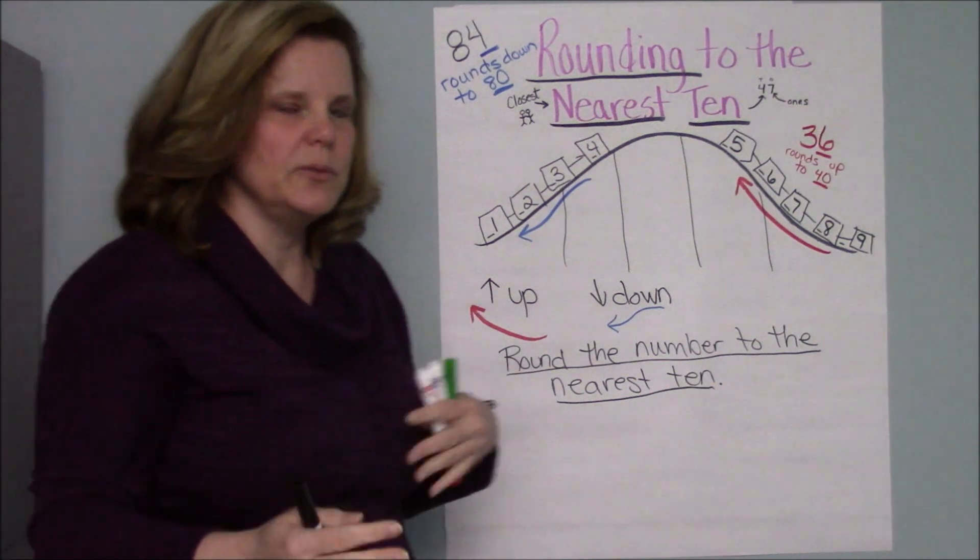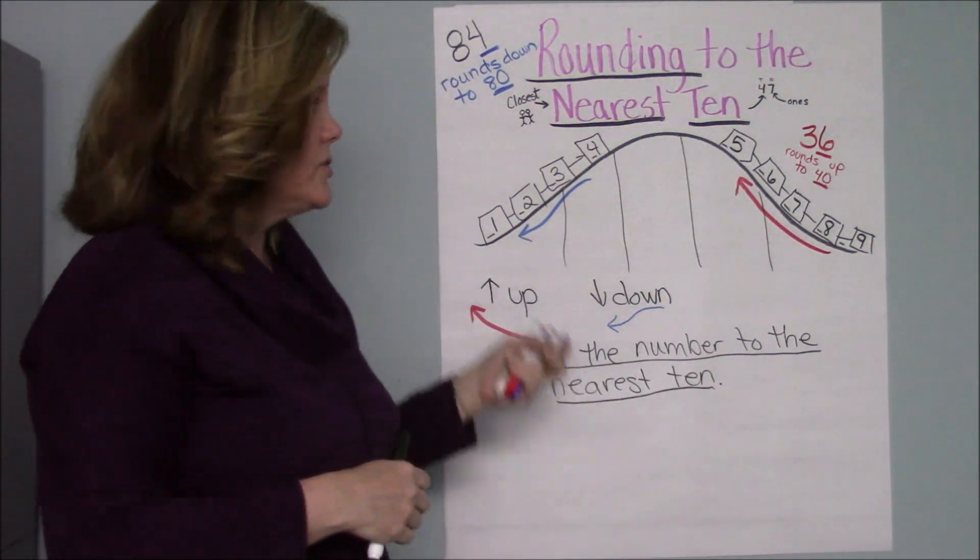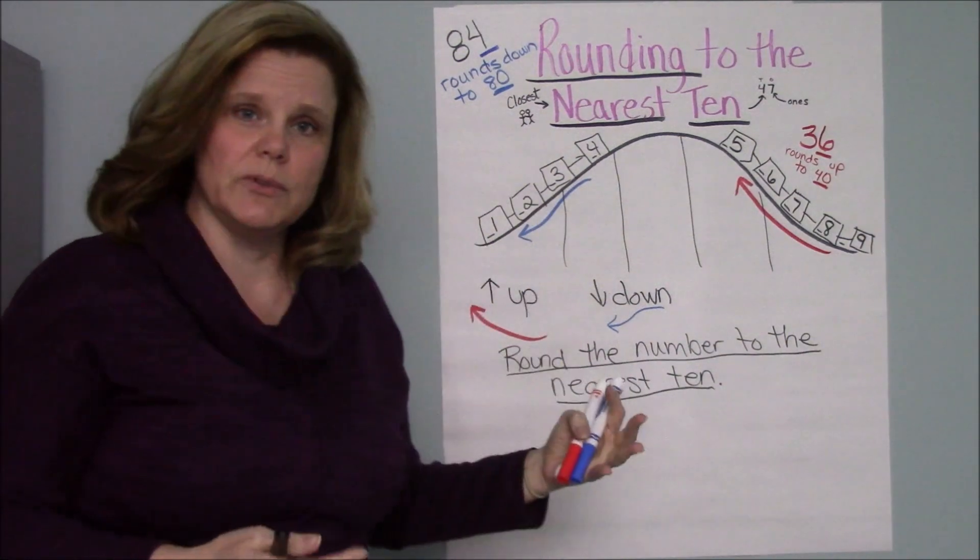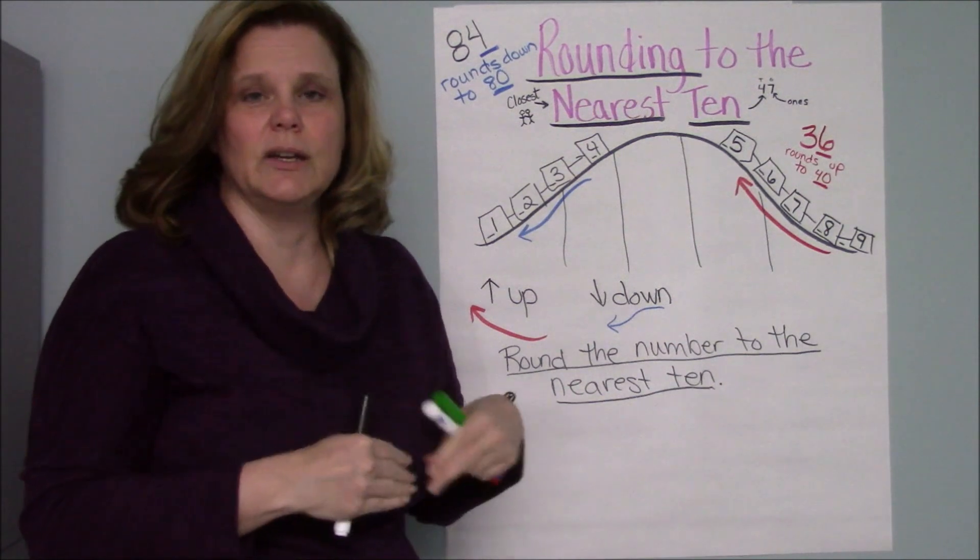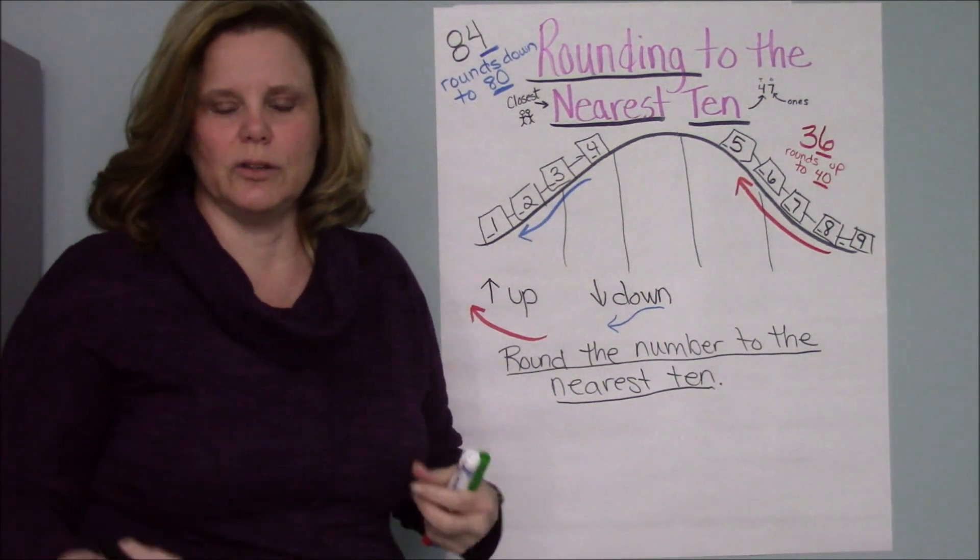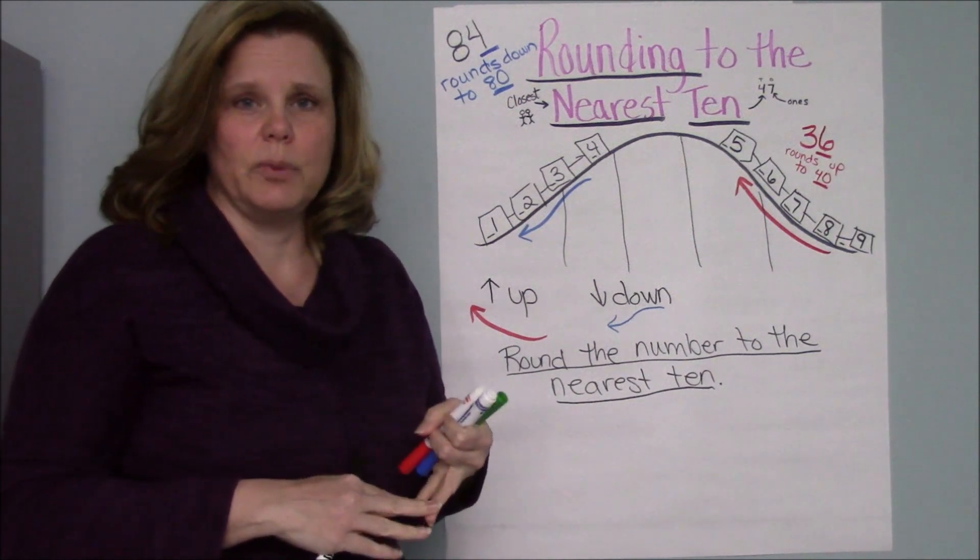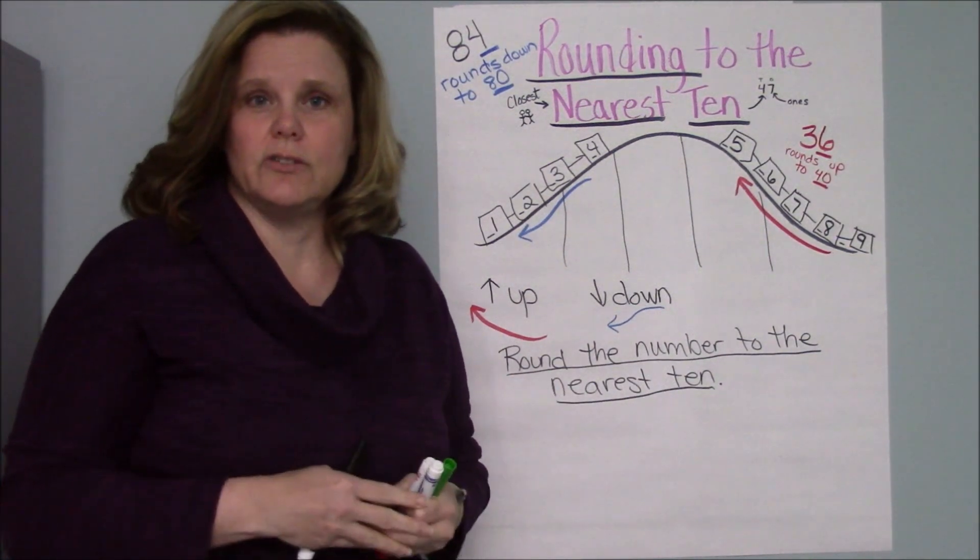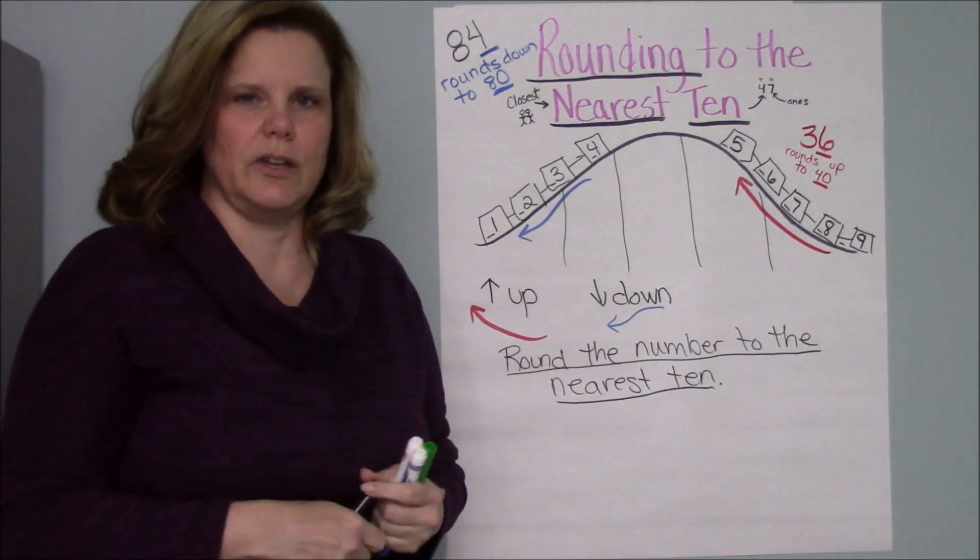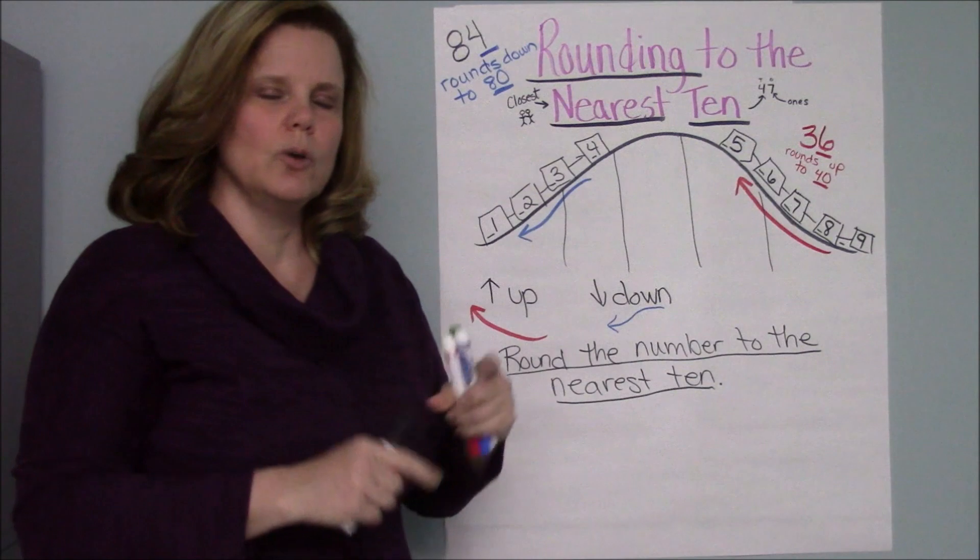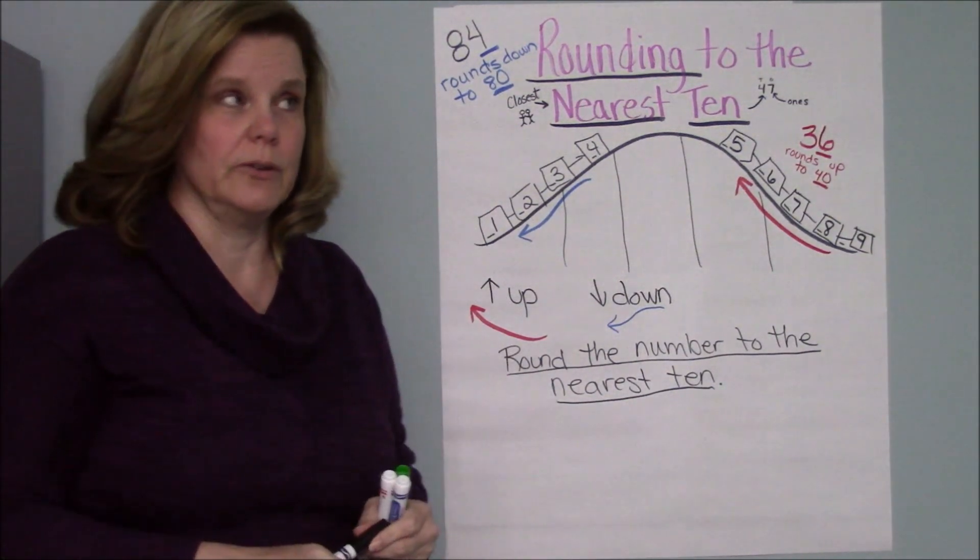Once you figure that out, you are going to be working with a partner to communicate what you did. So I'm going to give you some numbers and you're going to decide, do I round up or do I round down? And once you do that, you need to tell your partner whether you rounded up or down, and you need to tell your partner why you decided to do that. What was your reasoning? What were you thinking? When you're talking with your partner, I want to hear very specific language from you.